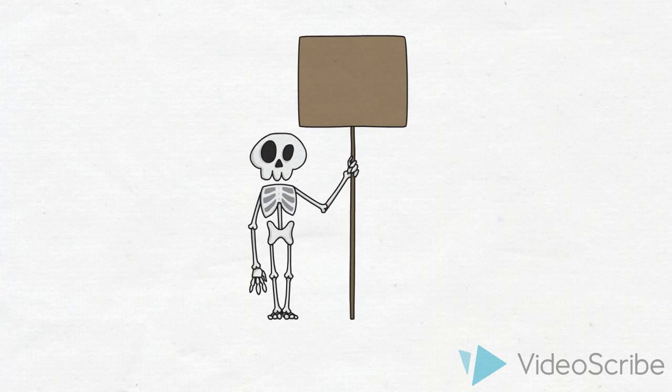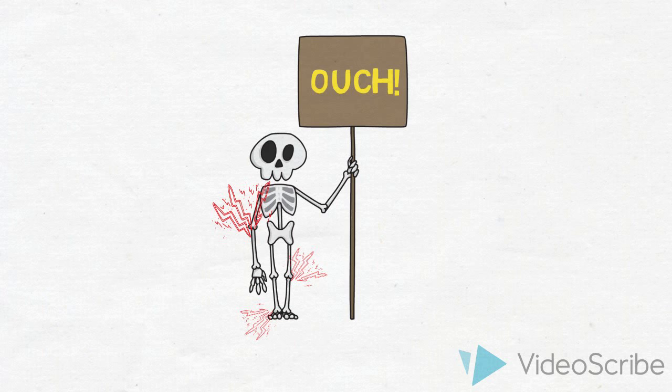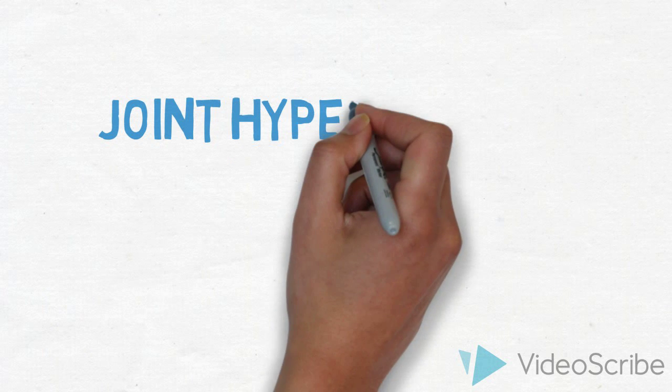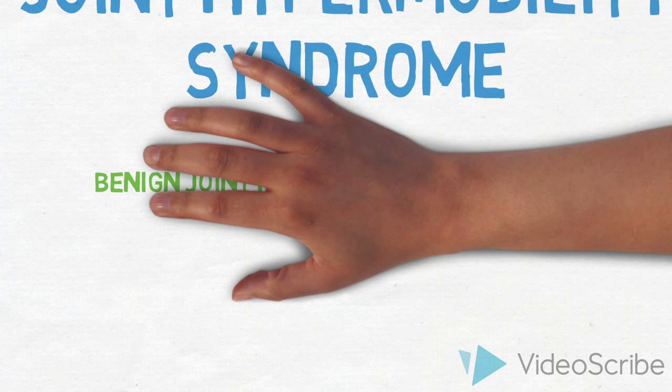But for some this can be responsible for many issues including body aches, pain and stiffness. This is then called joint hypermobility syndrome, also known as benign joint hypermobility syndrome.